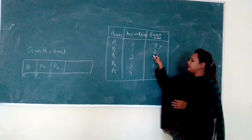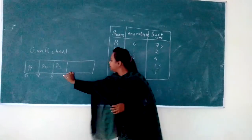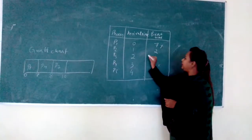P2 burst time is 2, so 8 plus 2 is 10. Now P2 also gets over.